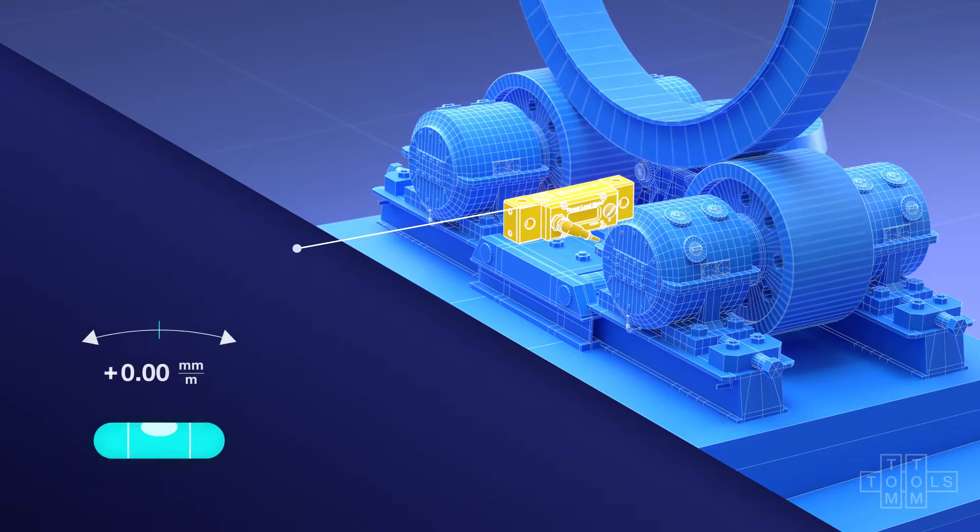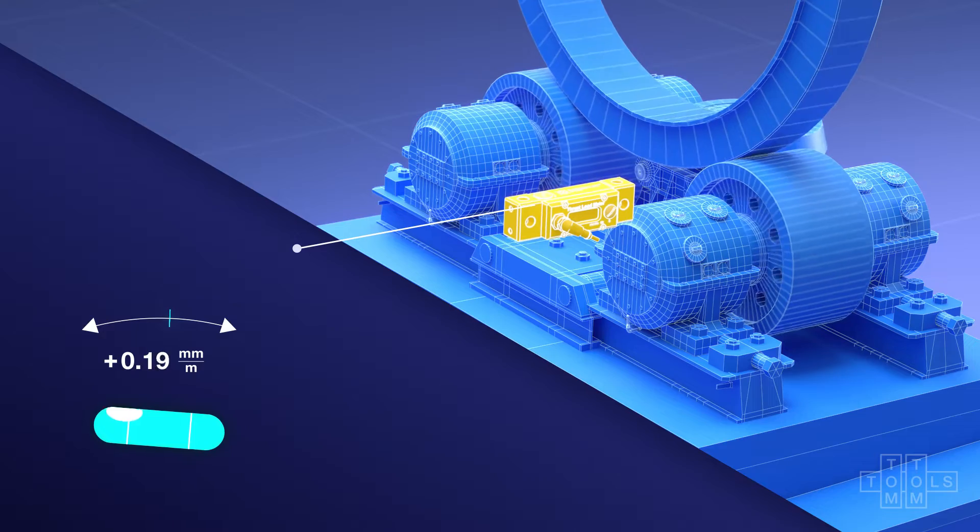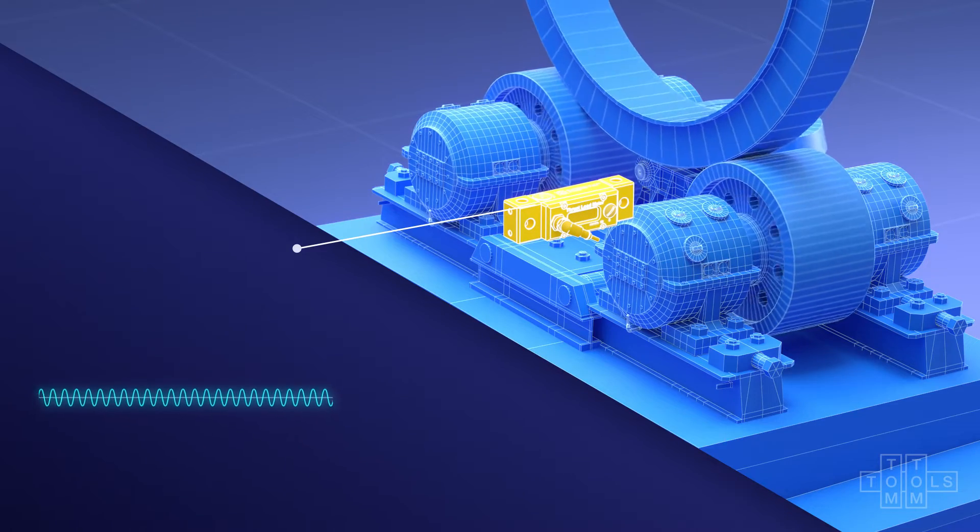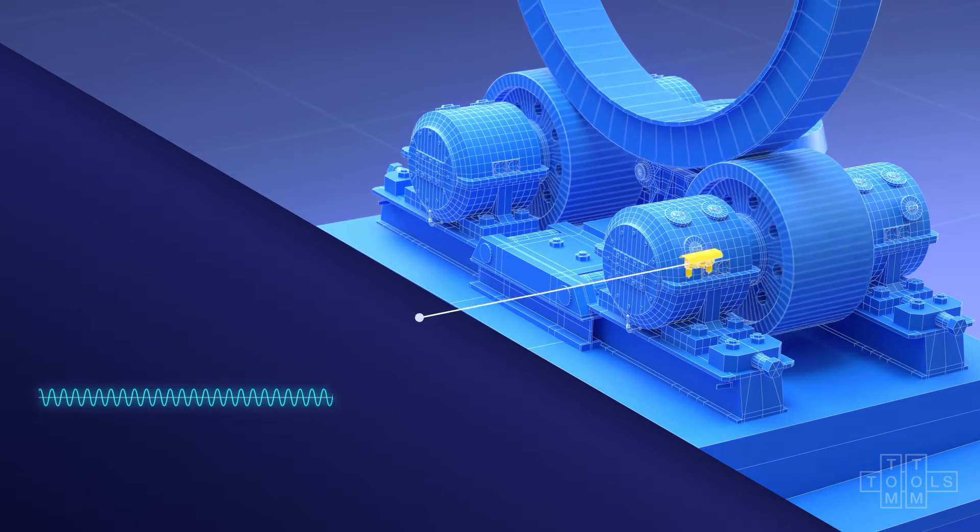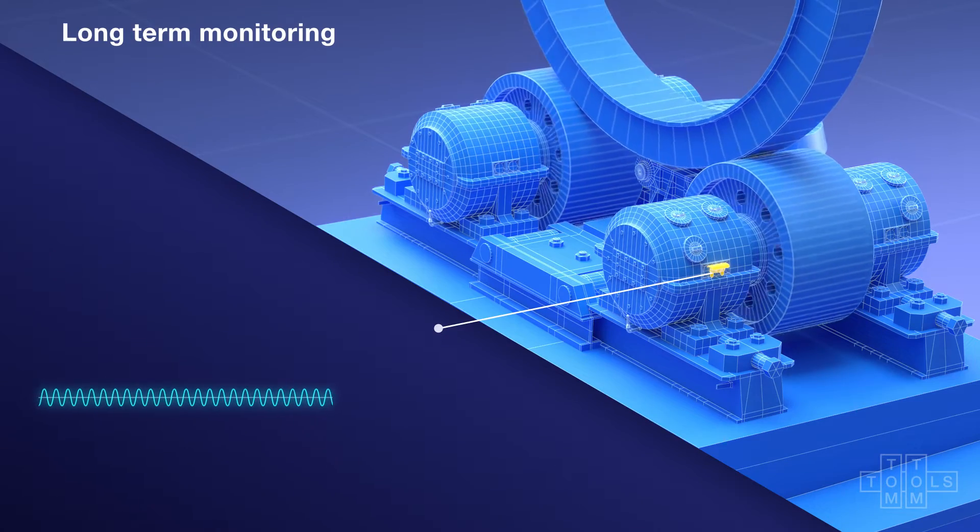It works like a traditional water level, but with much greater accuracy and a signal output. As previously mentioned, it must be installed on the bearing that is experiencing the thrust load.